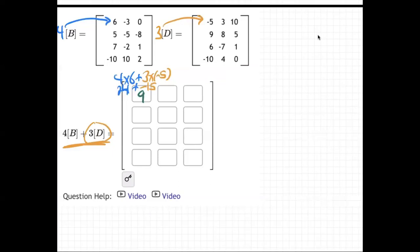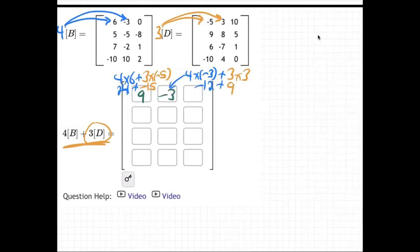And then in the second spot, you do it again: four times negative three, plus three times three. So negative 12 plus nine — that comes out to negative three. Et cetera, you have to do every one of those. It's kind of really painful.